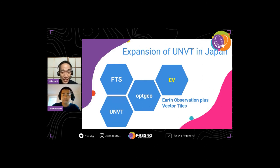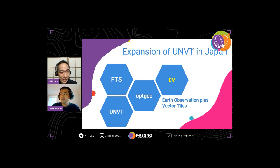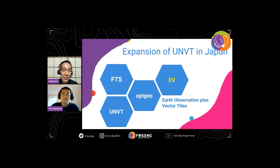I would like to introduce another project I call EV. This is a kind of subclass of Optgeo, but we are trying to convert earth observation data into vector tiles and also use it with other vector tile data. I created this project because I think earth observation data is a really hot topic and has a lot of opportunity when used together with vector tile map data.